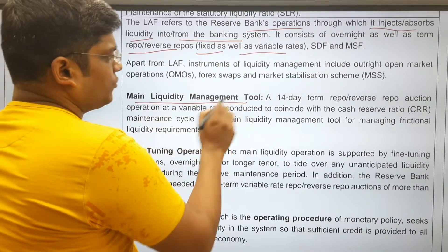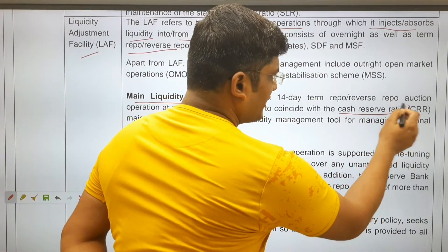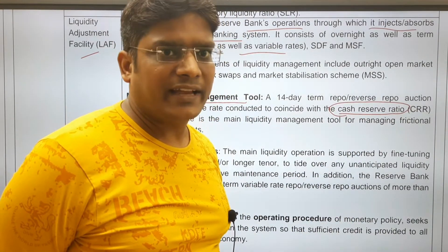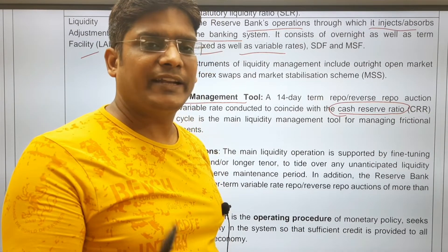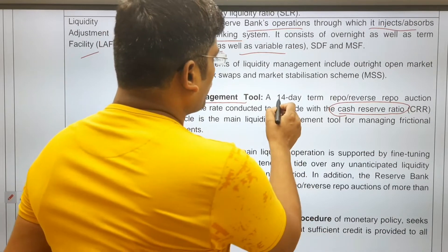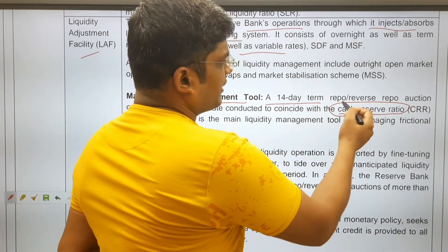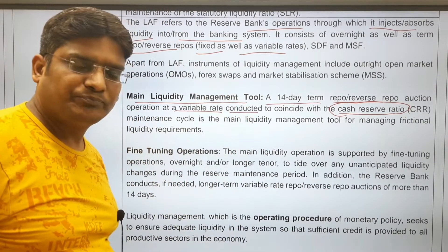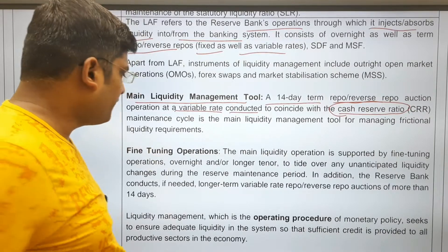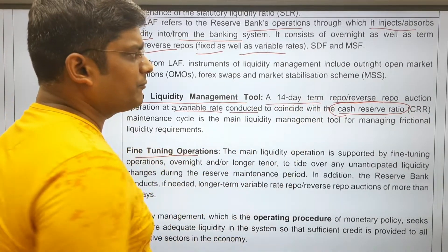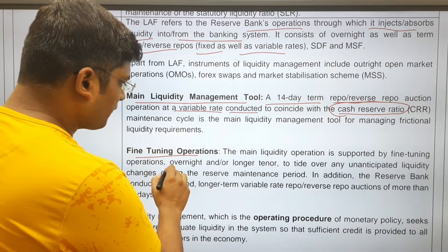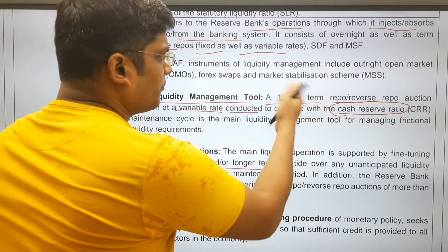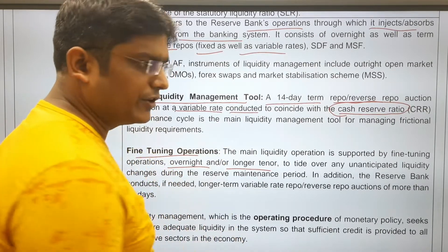CRR is maintained on alternate Fridays after 14 days. Since some banks have surplus money and some have a deficit, RBI conducts 14-day term repo and reverse repo auctions at variable rates. Fine-tuning operations are also conducted for overnight or longer tenures of less than 14 days to manage short-term liquidity needs.